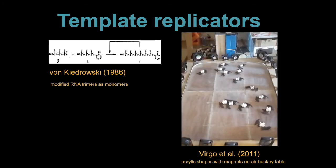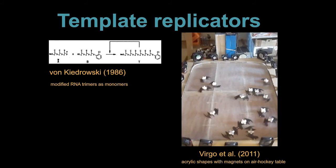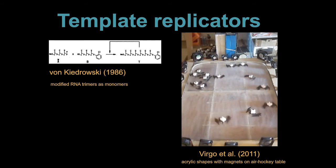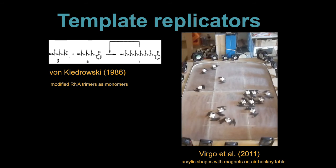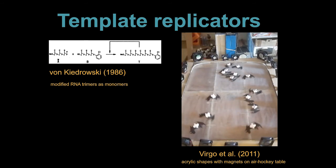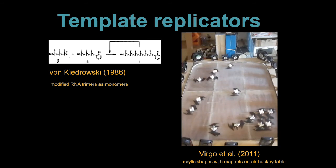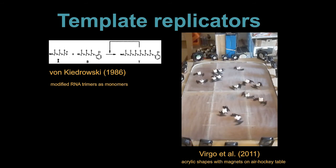This has been shown experimentally. On the left is a famous example by Günter von Kiedrowski, in which he constructed monomers from modified RNA trimers. On the right is a demonstration that some colleagues and I made, where the monomers are made of plastic and magnets and are being blown around by CPU fans on a giant table. Both of these examples do work. You can start with one string and form its complementary string and then go through another cycle and end up with multiple copies of the original string.